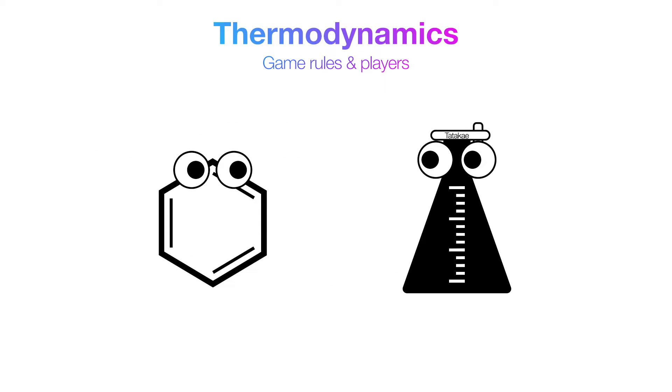Our first player is the system - our chemicals, mixtures, and so on - what we're interested in. And the surroundings are us, the player, and everything else that's not the system. The goal of this game is to exchange currency in such a way that the system does something for us, and that currency is energy.